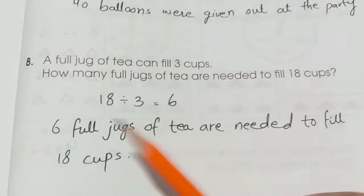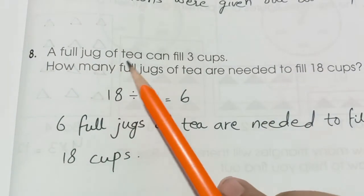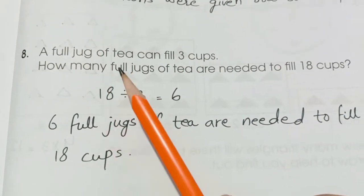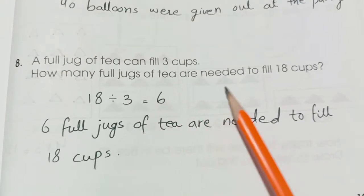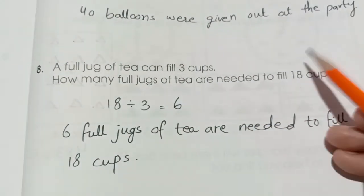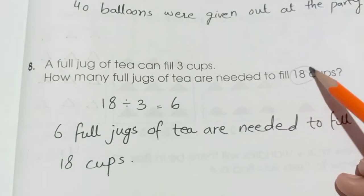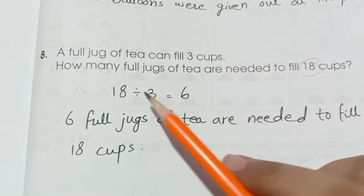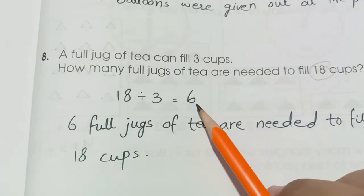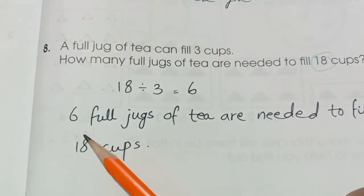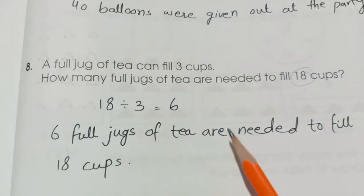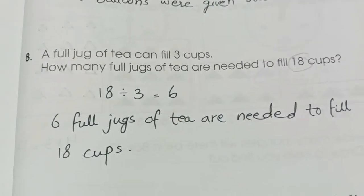Question number 8. A full jug of tea can fill up 3 cups. How many full jugs of tea are needed to fill 18 cups? So when we have the total number, we always have to divide the number. 18 divided by 3 is 6. 3 sixes are 18. 6 full jugs of tea are needed to fill 18 cups.